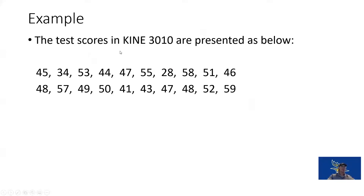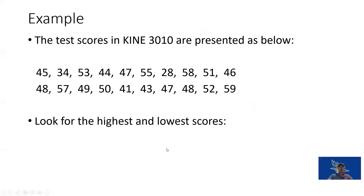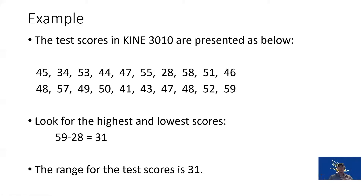Here's an example using test scores for KINE 3010. Looking for the highest and lowest scores, we see that 59 is the high score and 28 is the low score. Subtracting the lowest from the highest gives us 31, so the range of these test scores is 31 points. This tells us what's happening on either end, but not the distribution compared to the mean.